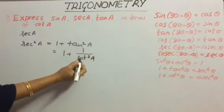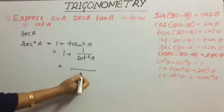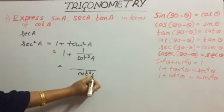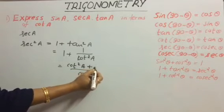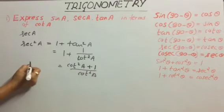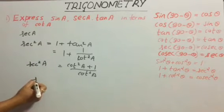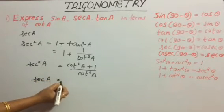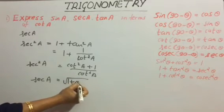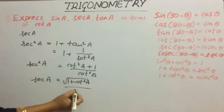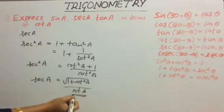So tan²a = 1/cot²a. Taking the LCM, this becomes (cot²a + 1)/cot²a. This is equal to sec²a. Therefore, sec a = √(1 + cot²a) / √(cot²a), that is √(1 + cot²a) / cot a.